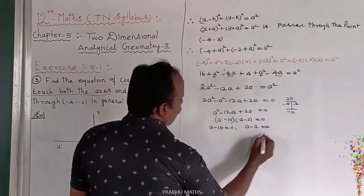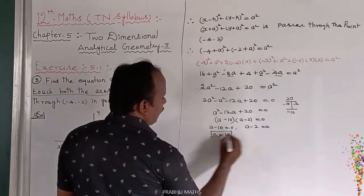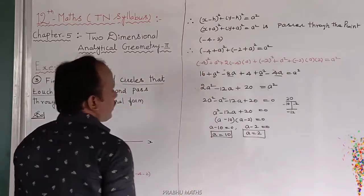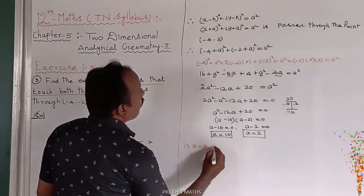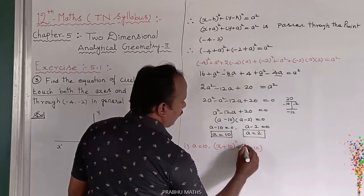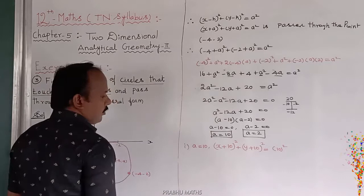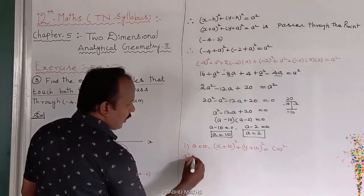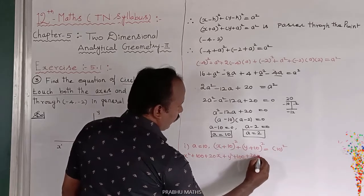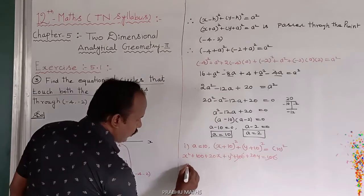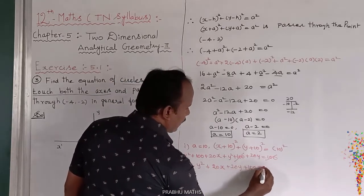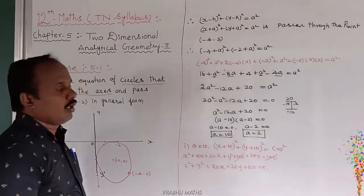So a equals 10 or a equals 2. For the first answer, a equals 10: x plus 10 whole square plus y plus 10 whole square equals 100. Expanding: x squared plus 100 plus 20x plus y squared plus 100 plus 20y equals 100, which simplifies to x squared plus y squared plus 20x plus 20y plus 100 equals 0.